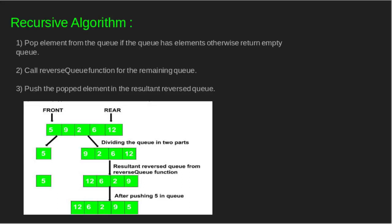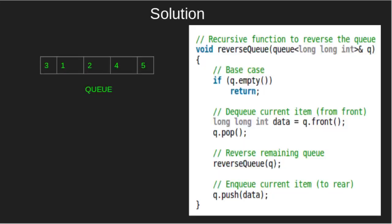Recursive algorithm: Pop elements from the queue if the queue has elements; otherwise, return an empty queue. Call the reverse function for the remaining queue. Push the popped element into the resultant reversed queue. As illustrated in this diagram, 5 is dequeued from the queue and then the reverse queue function is called to reverse the remaining queue.